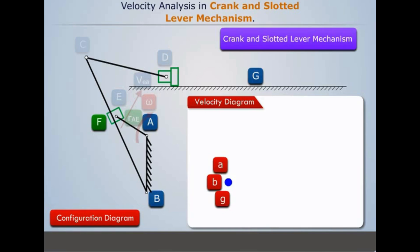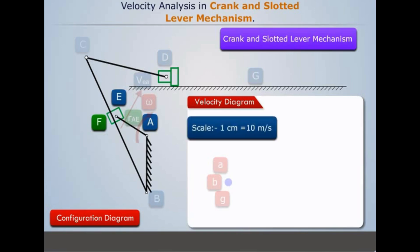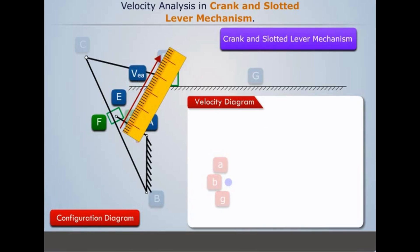Now as the radius and angular velocity of the crank AE is known, we choose a convenient scale, say 1 cm equals 10 m per second. And draw a scale line representing velocity of link AE in the direction perpendicular to link AE, and mark the end point as lowercase e.